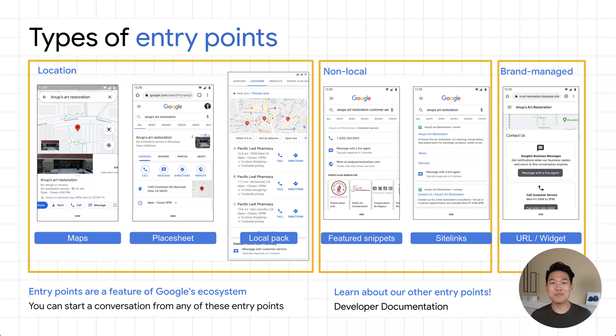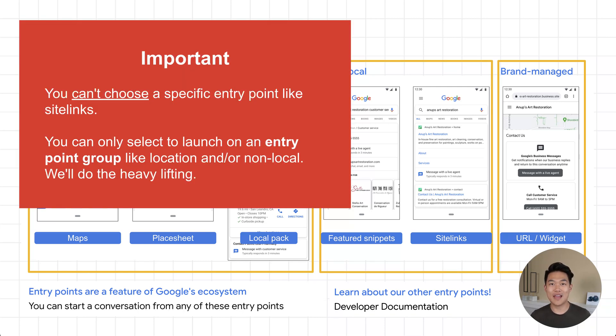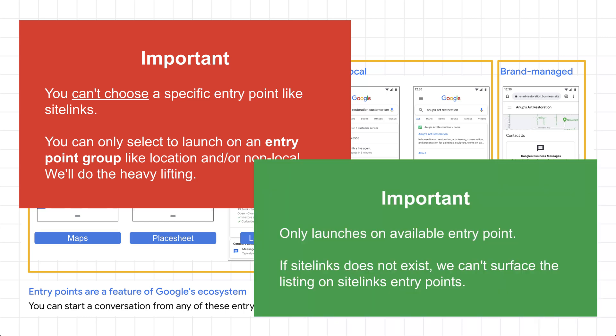Something important to note is that when you launch on an entry point group, you cannot choose which entry point within that group you want to launch on. Additionally, if a brand does not have a search listing through a certain entry point like Sitelinks, launching your business messages agents or locations will not create that entry point for that brand.